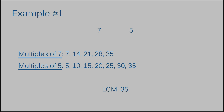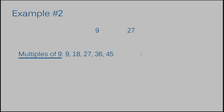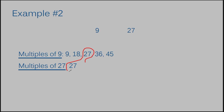Let's move on to another example to find the least common multiple by listing multiples again. Example number two, we have nine and 27. Here are the first few multiples of nine, and my first multiple of 27. I only listed one multiple of 27 because 27 was the first number the two had in common, so there's no point going on. 27 is the least common multiple between nine and 27.